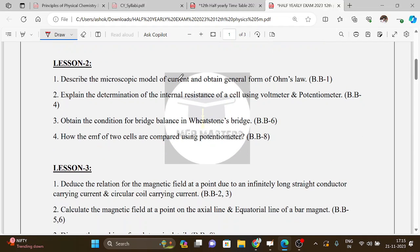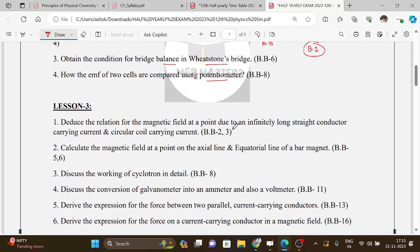Then Lesson 2: microscopic model of current and obtain the general form of Ohm's law. Determine the internal resistance using voltmeter - this is the book back question. Potentiometer is also in the book. Then obtain the condition for bridge balance in Wheatstone bridge. How the EMF of two cells are compared using potentiometer - very important question, Lesson 2.